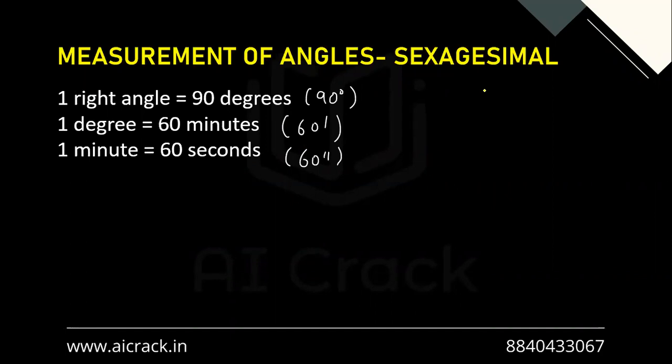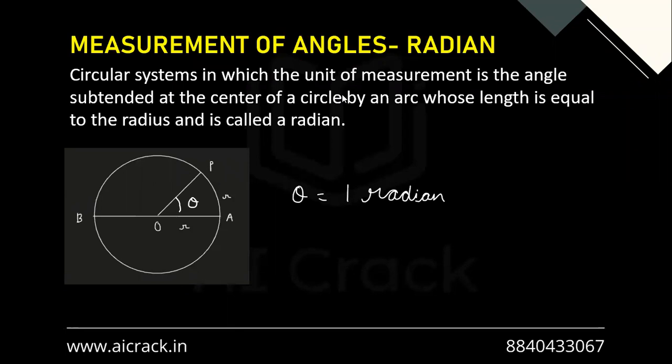Now talking about the sexagesimal system. There have been no questions asked on this, but just for the sake of reference, you have to remember: one right angle equals 90 degrees, one degree equals 60 minutes, one minute equals 60 seconds. Just have a look at the notations — single dash, double dash, and 90 degree. I won't be spending too much time on these concepts because these are just introductory.